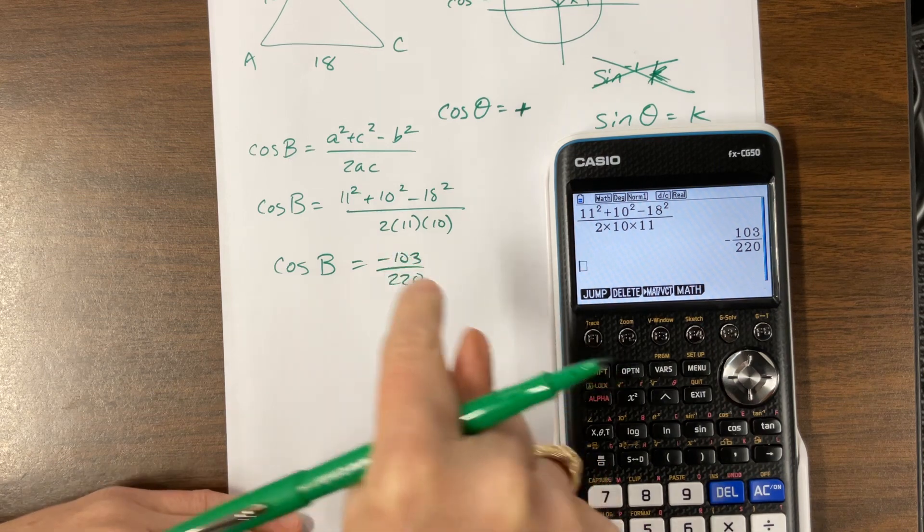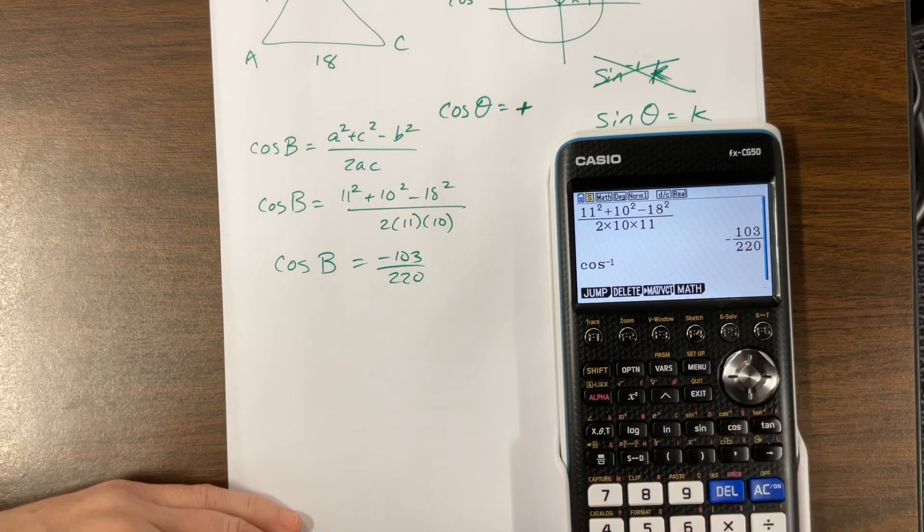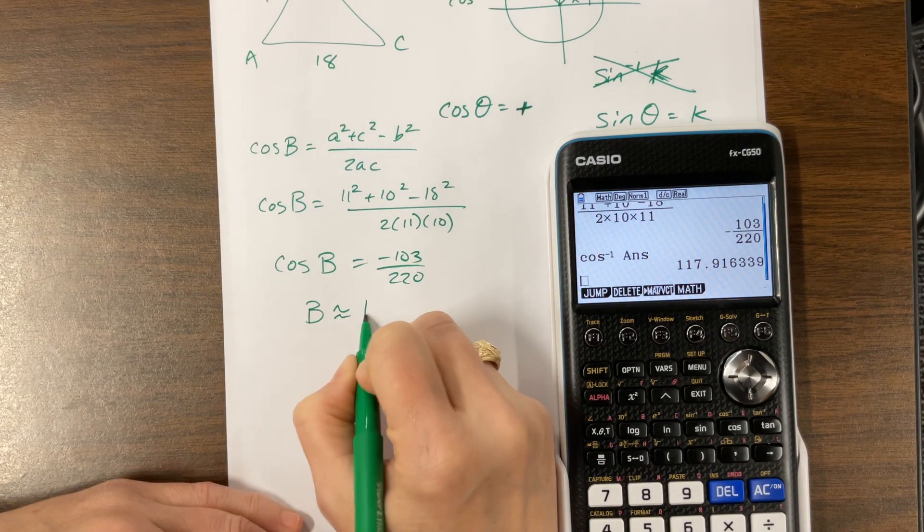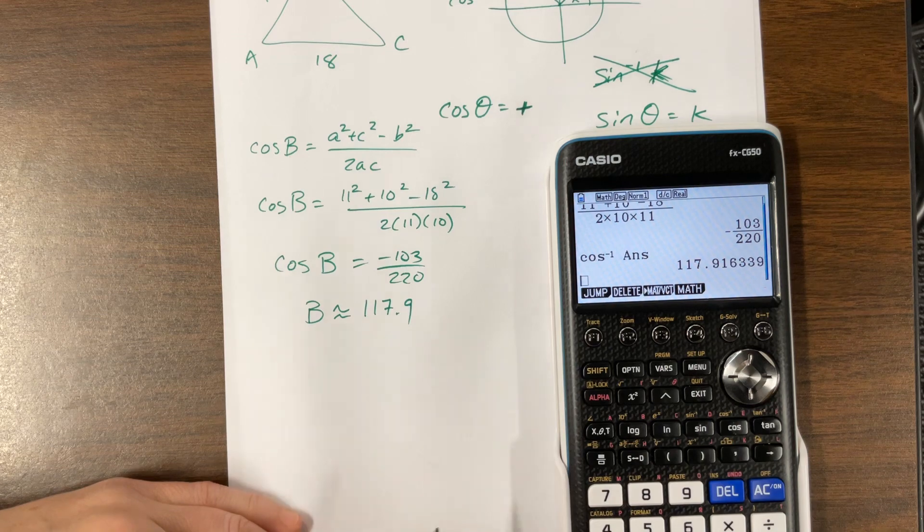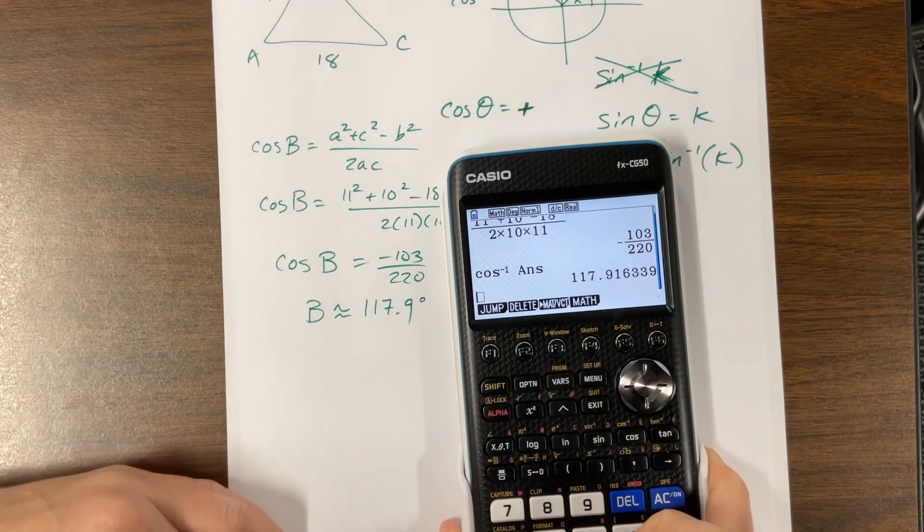Okay, so now notice what we just got. We just got the cosine of B is equal to negative 103 over 220. Negative tells me this is an obtuse angle. Okay, so inverse cosine of that answer. So my angle B is about 117.9 degrees. I should probably round more, but I'm too lazy to write it right now.